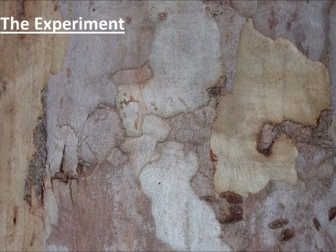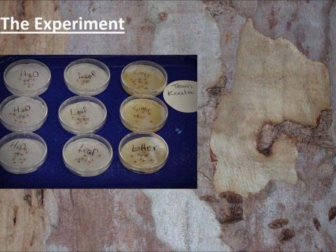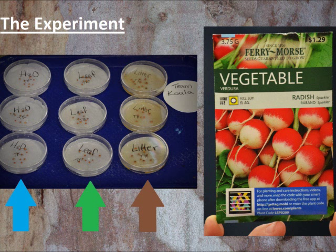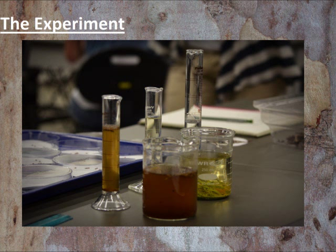Team Koala designed an experiment to test these hypotheses. We set up nine petri trays lined with filter paper, each containing ten radish seeds. The first three trays was our control group, the second three trays was our test group for leaves only, and the third set of trays was our test group for leaf litter only. We collected 50 fresh leaves and 50 dry leaves and recorded the masses to be 1.93 grams and 1.10 grams, respectively. We crushed the fresh leaves to a thick pulp and pulverized the litter into a fine brown powder. We steeped each of them in their own beaker containing 200 milliliters of hot tap water for five minutes.